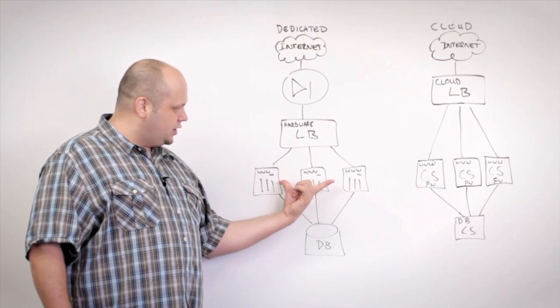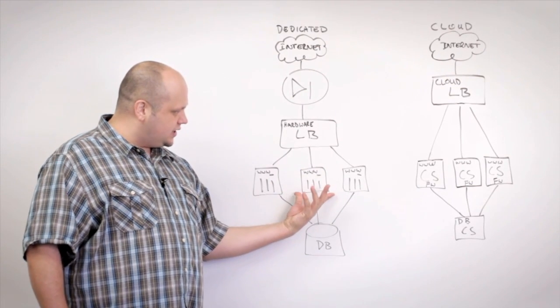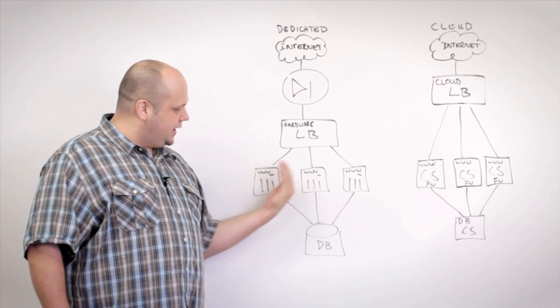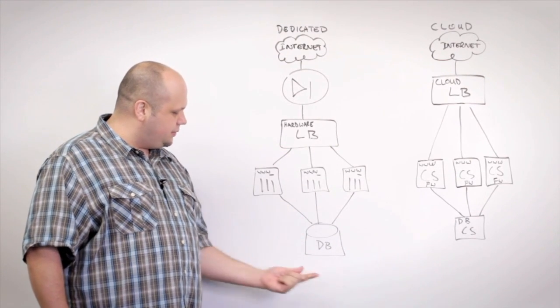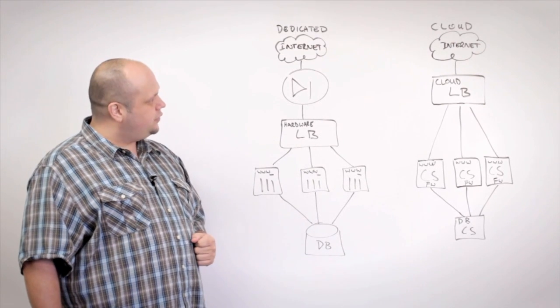So three web servers to handle the load of traffic that's coming in, a balancer to play traffic cop and distribute the connections coming in, and then a shared database for consistency.